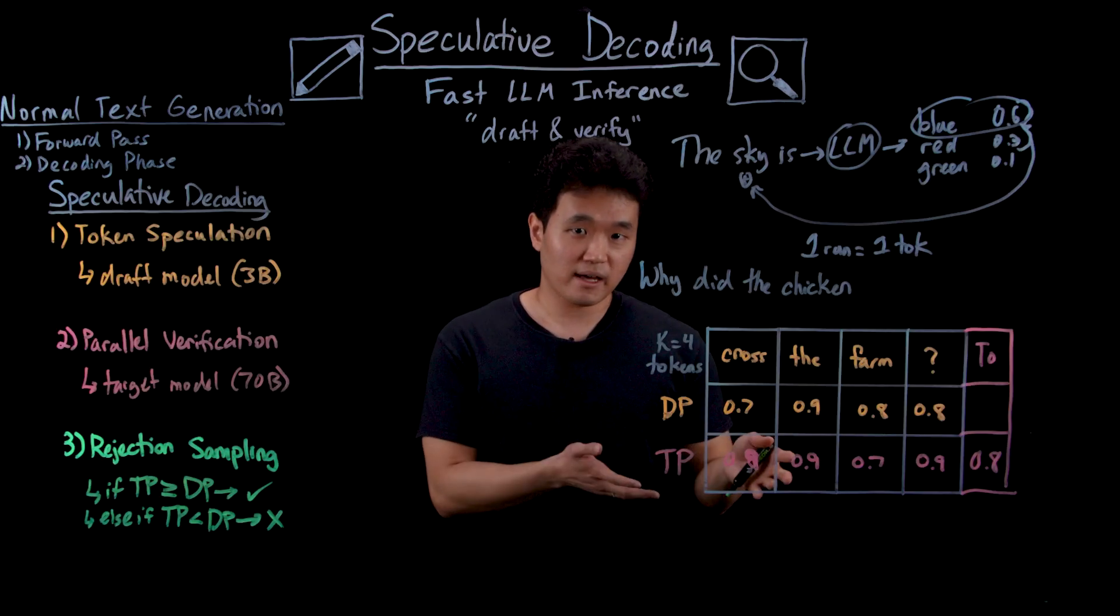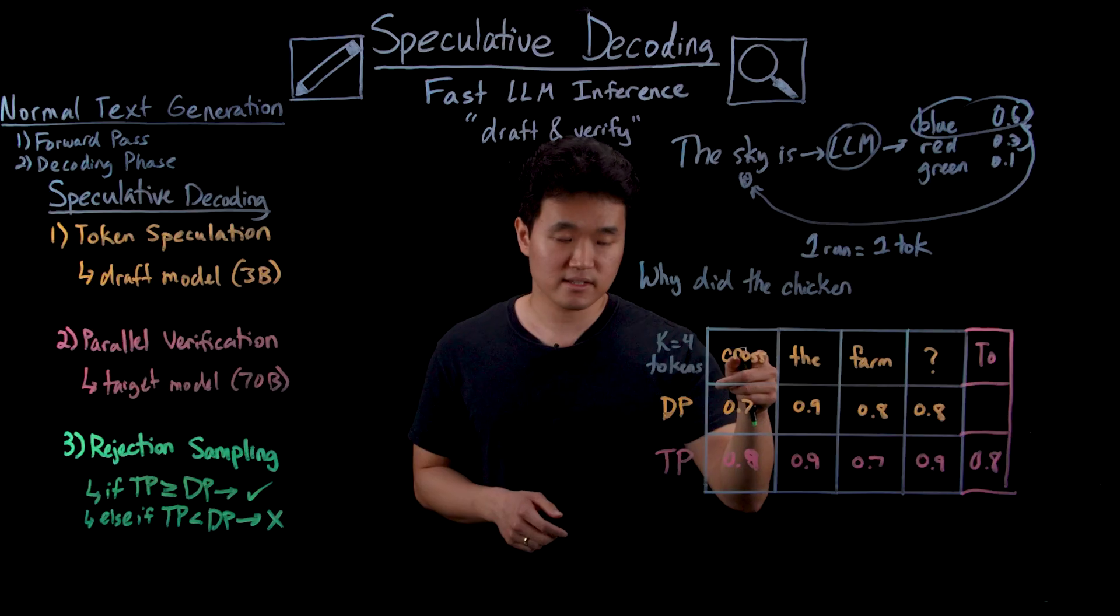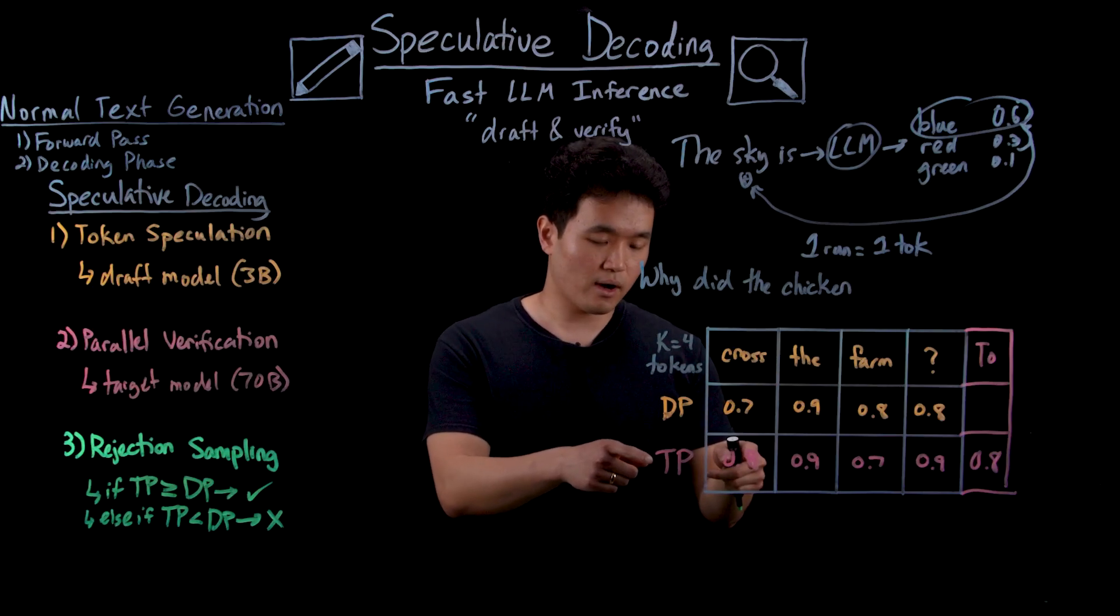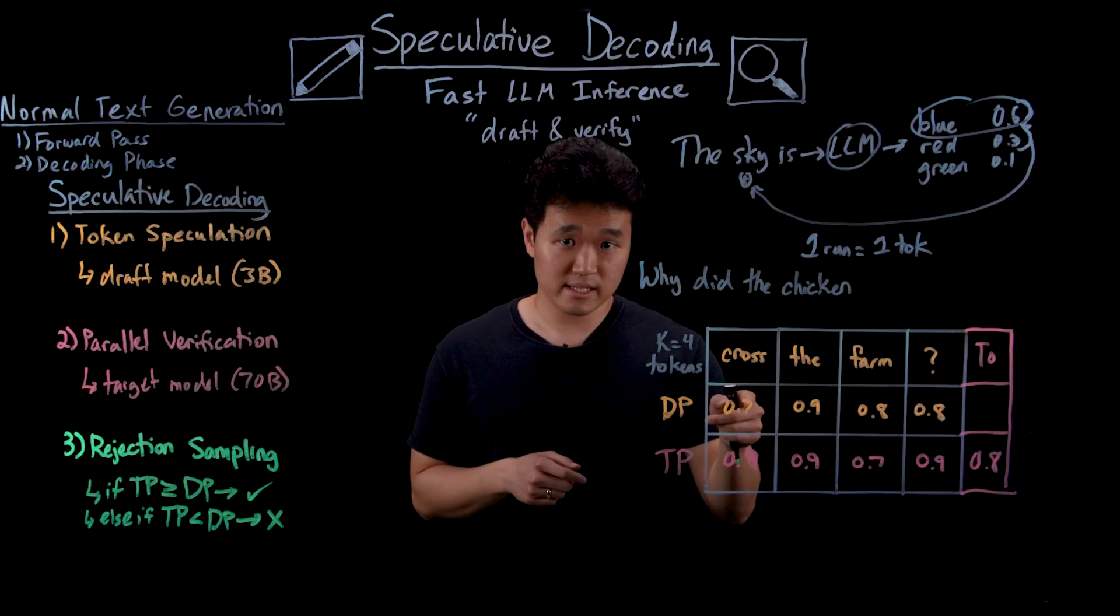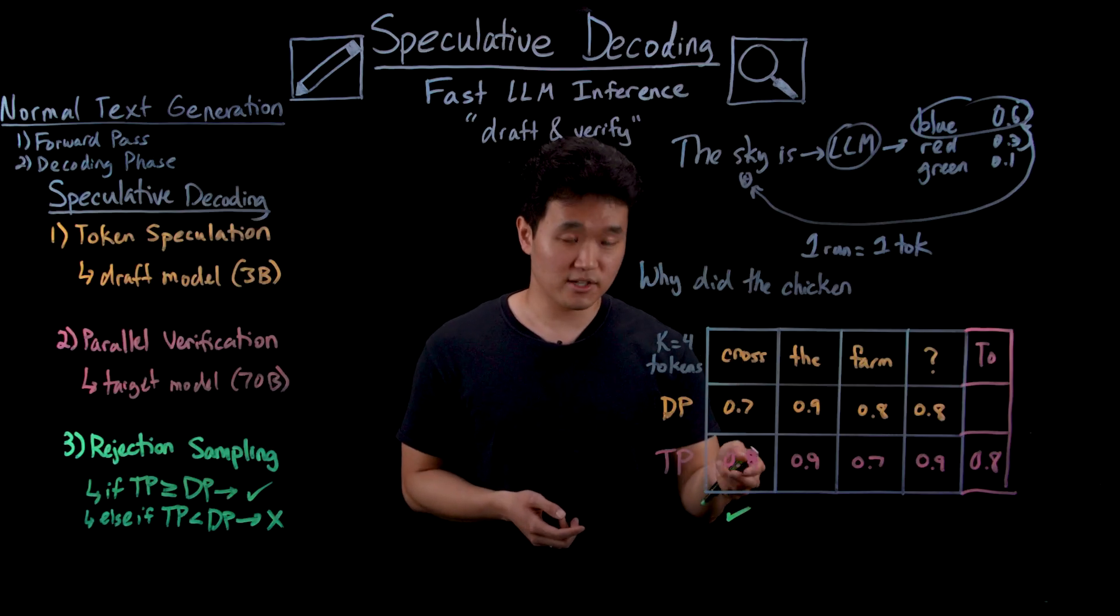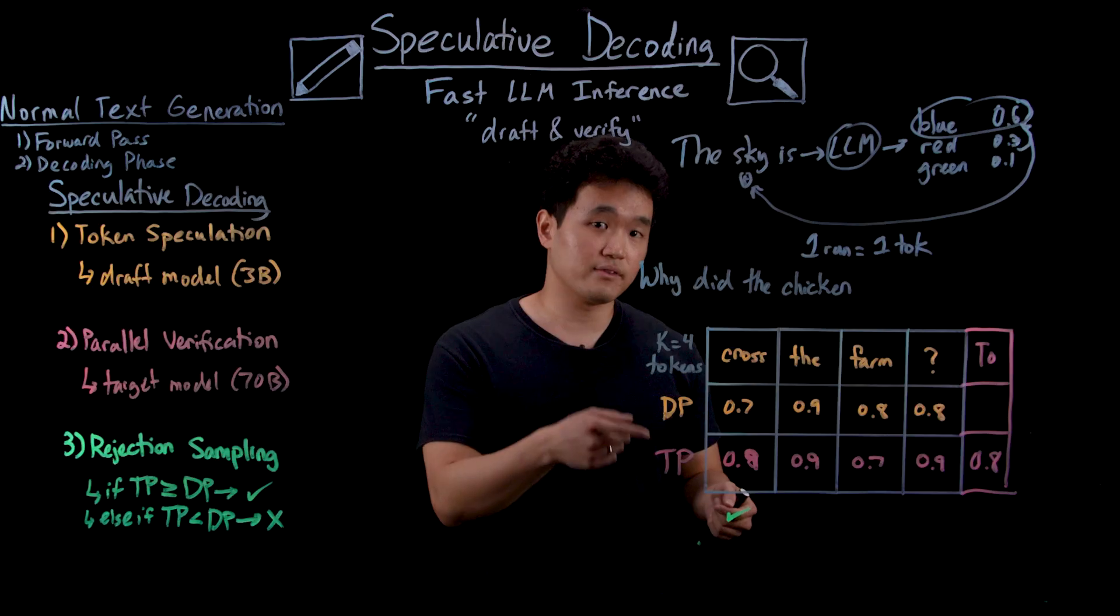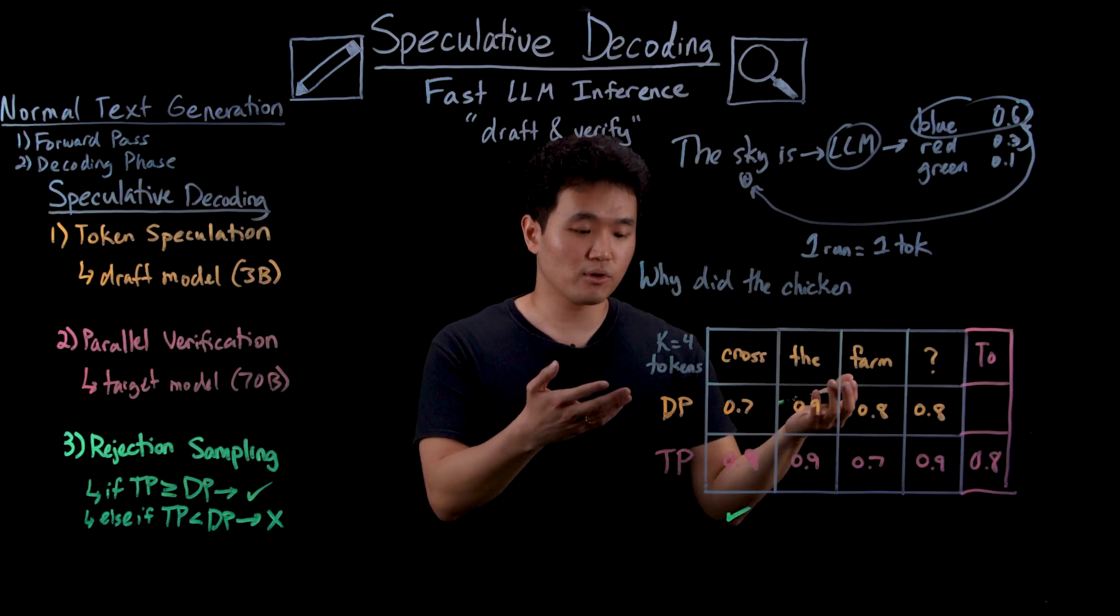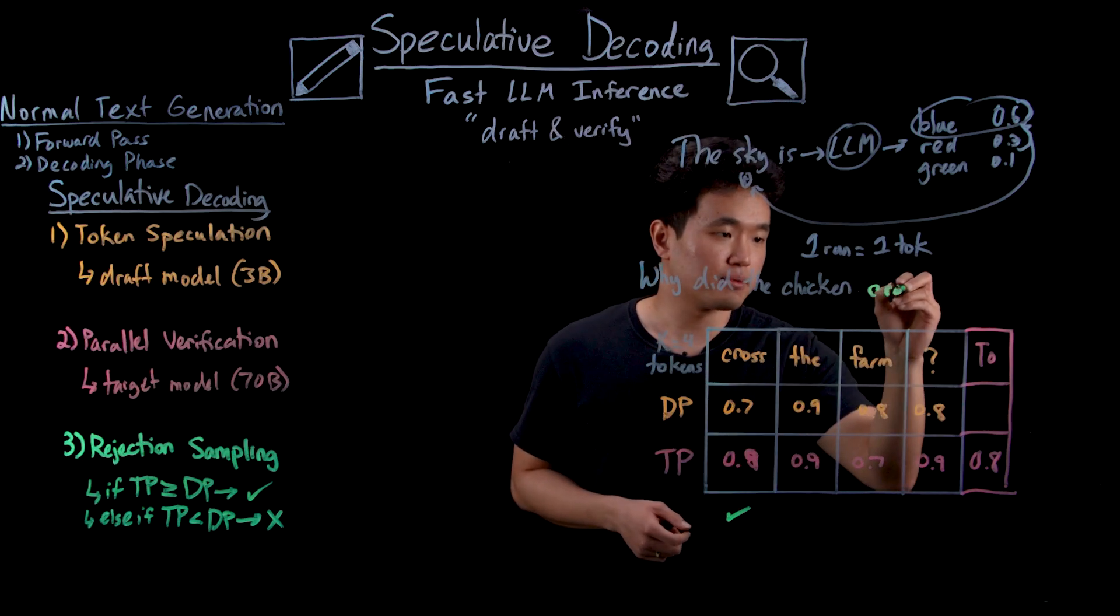So with all that being said, let's apply it to our example. The first word on the chopping block is the word cross. The probability from the target model is 0.9, while the draft model is 0.7. 0.9 is greater than 0.7, so in this case we accept this token, meaning that because the target model is more confident than the draft model that the word cross is correct, we're comfortable with just accepting the draft model's guess and appending the word to our output.